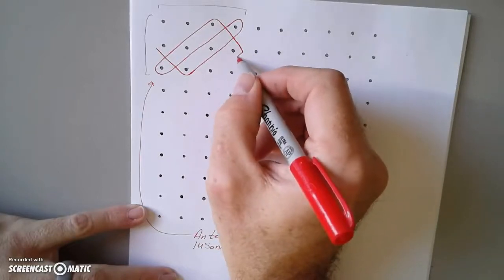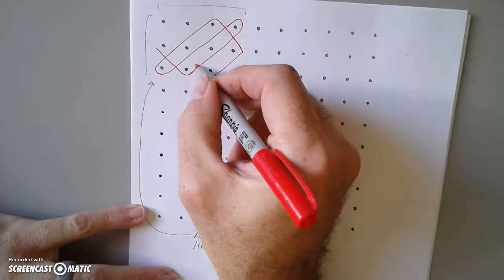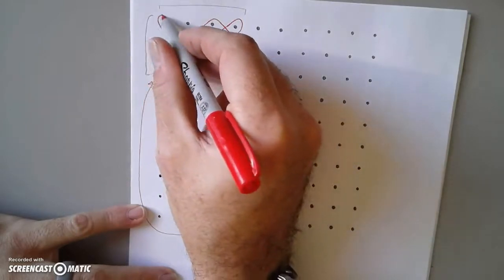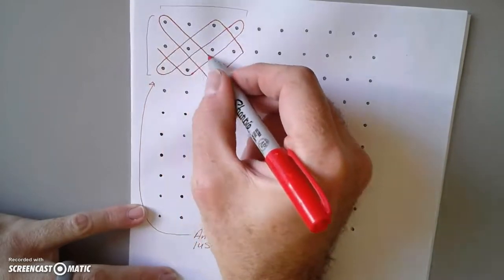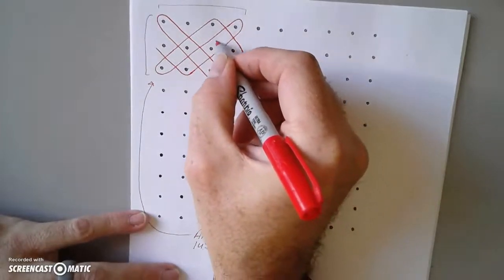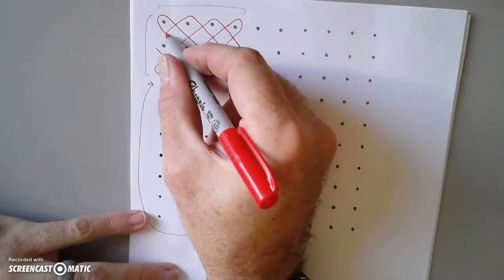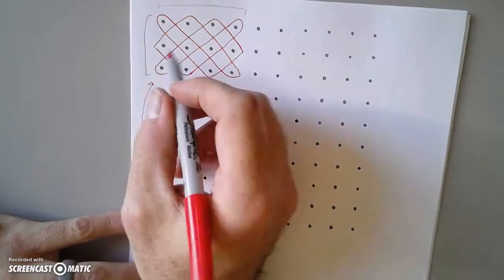So at the edge make a 90, edge 90, corner 180, corner 180, edge 90, and then we're back to where we started.